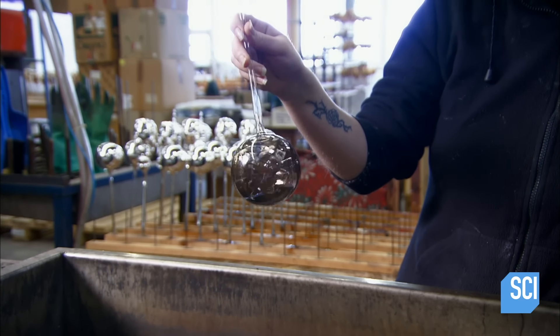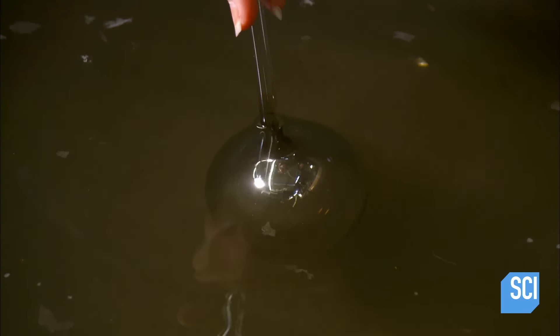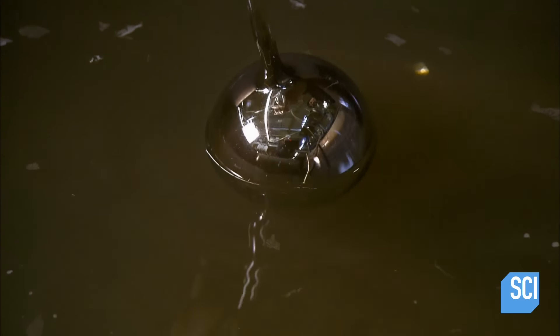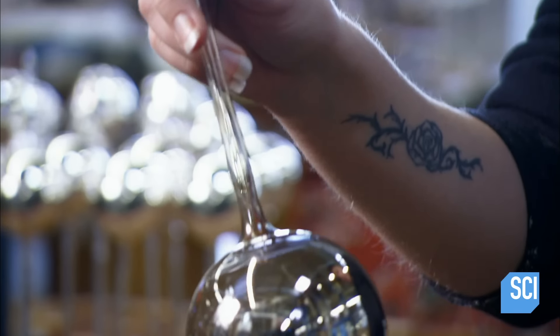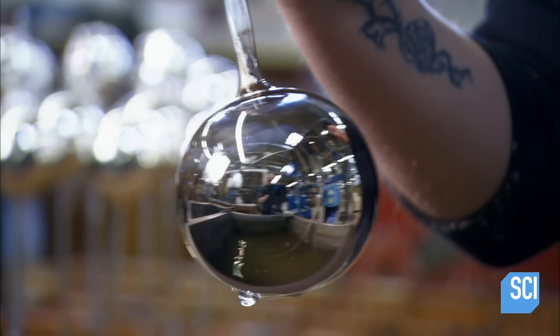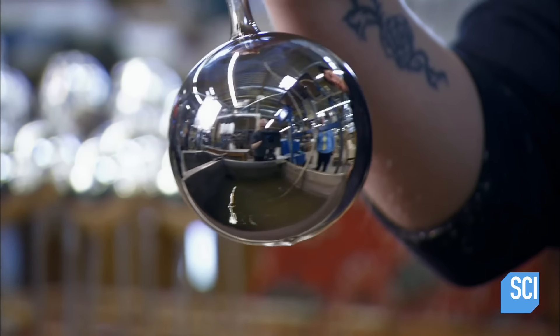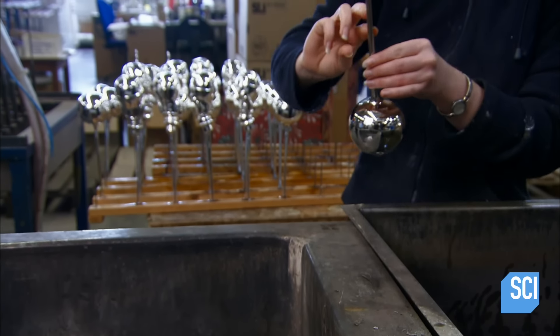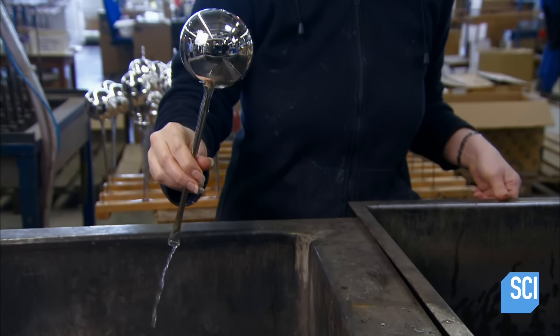She swirls the silvering liquid around to completely coat the inside of the ornament. A final dip gives this bauble a mirror finish from the inside out. She empties the silvering solution into another tank for recycling.